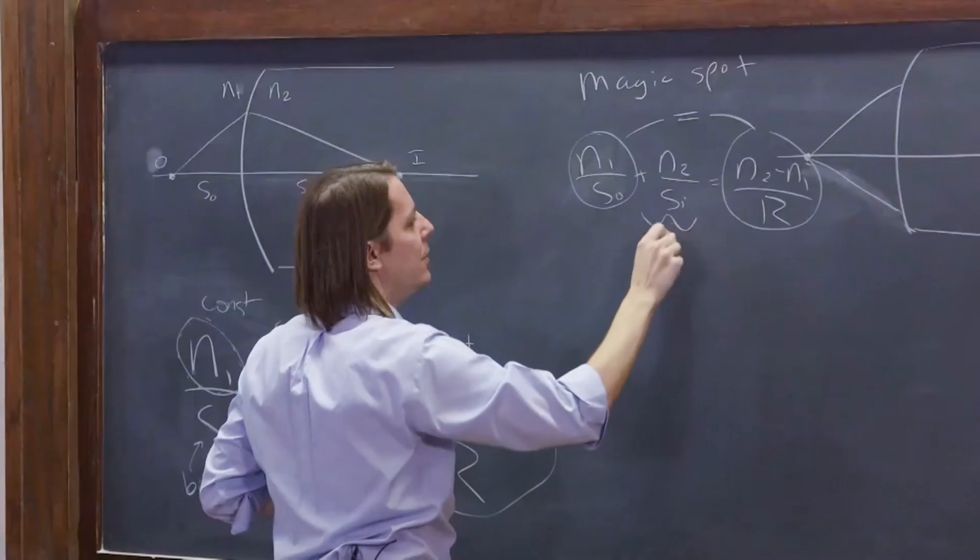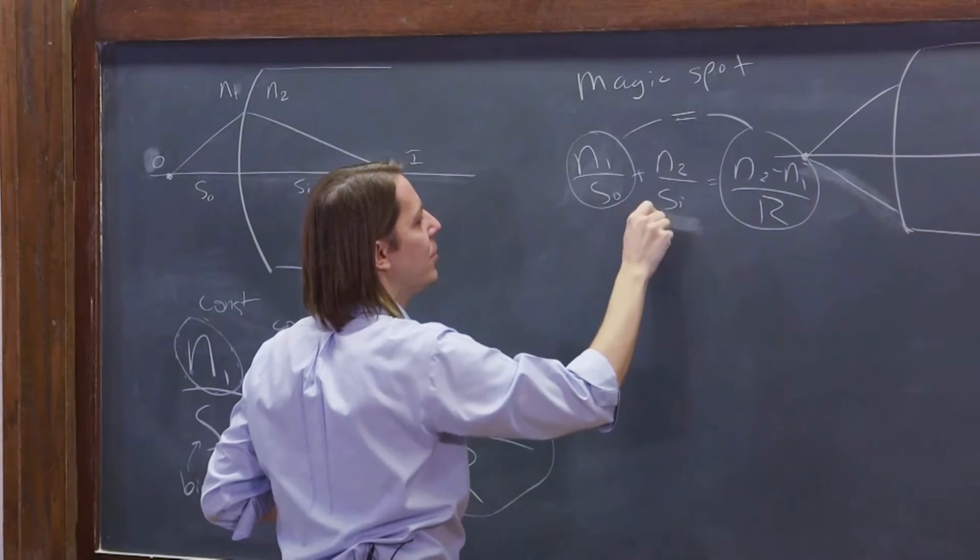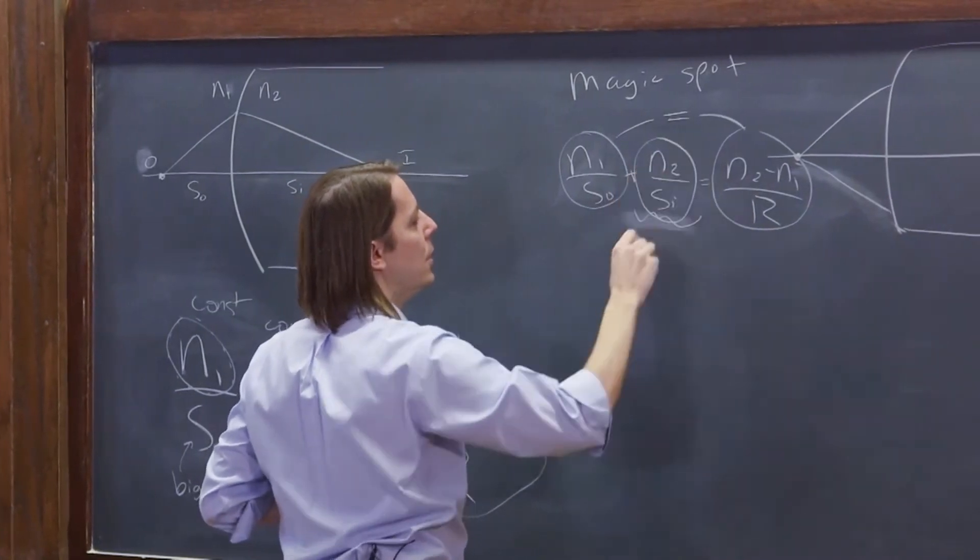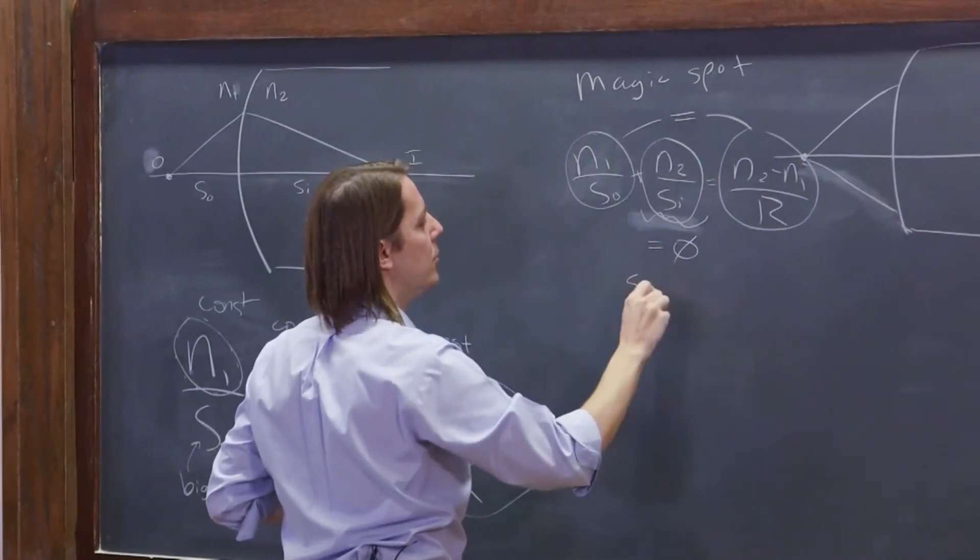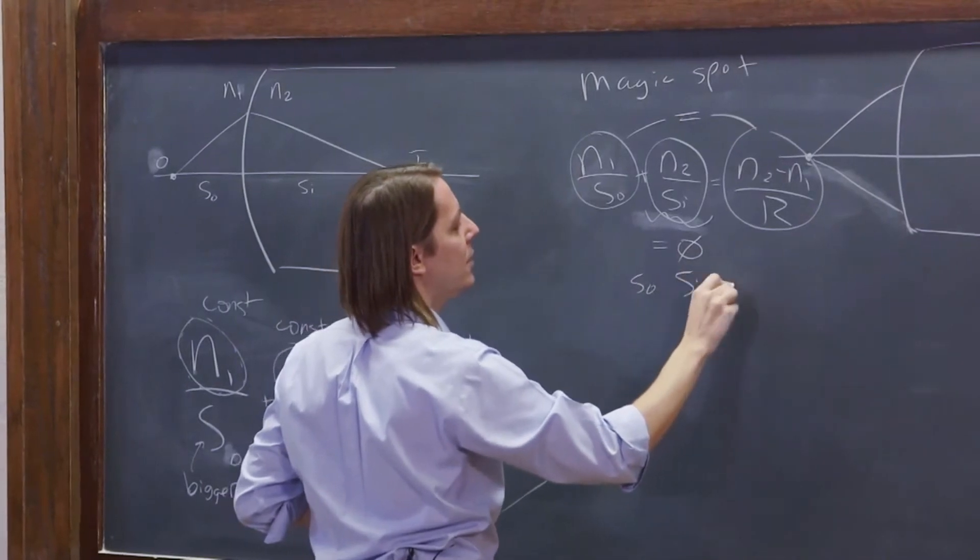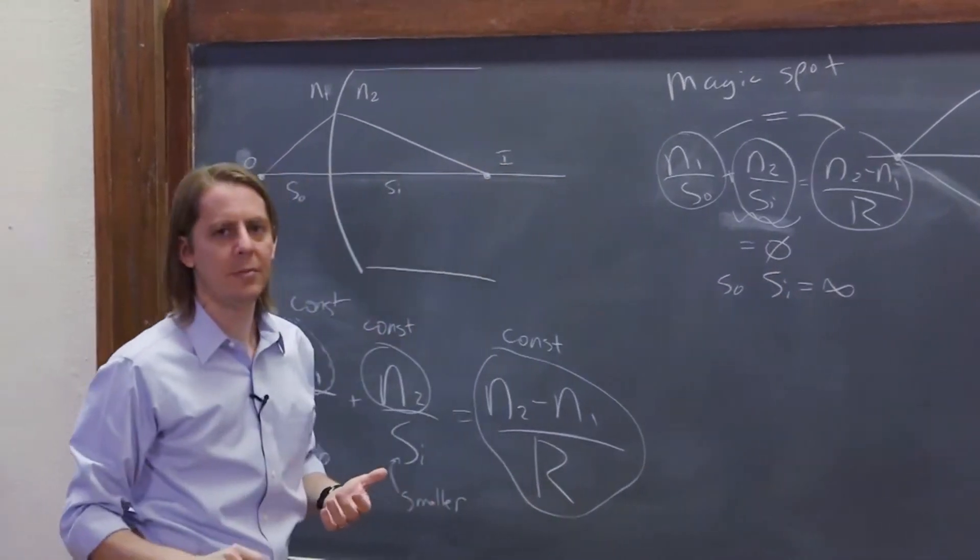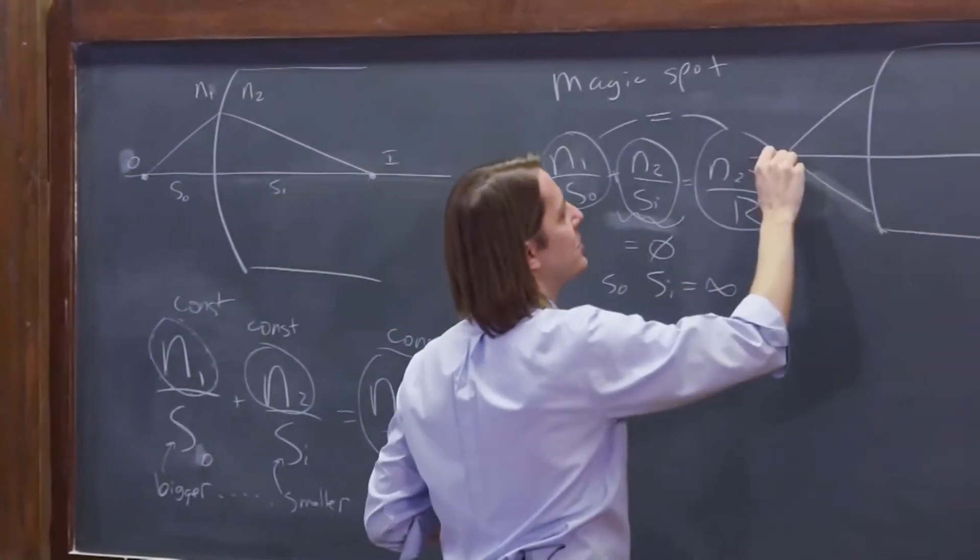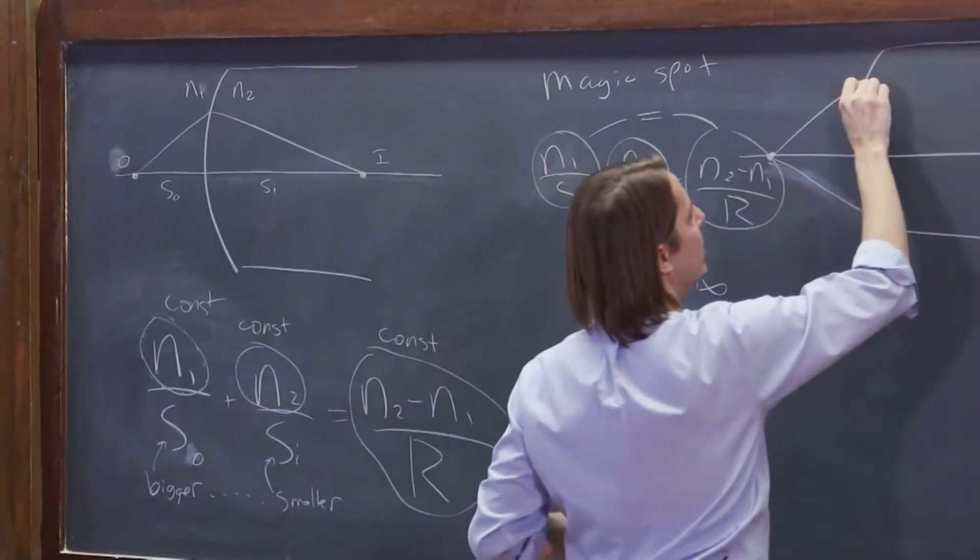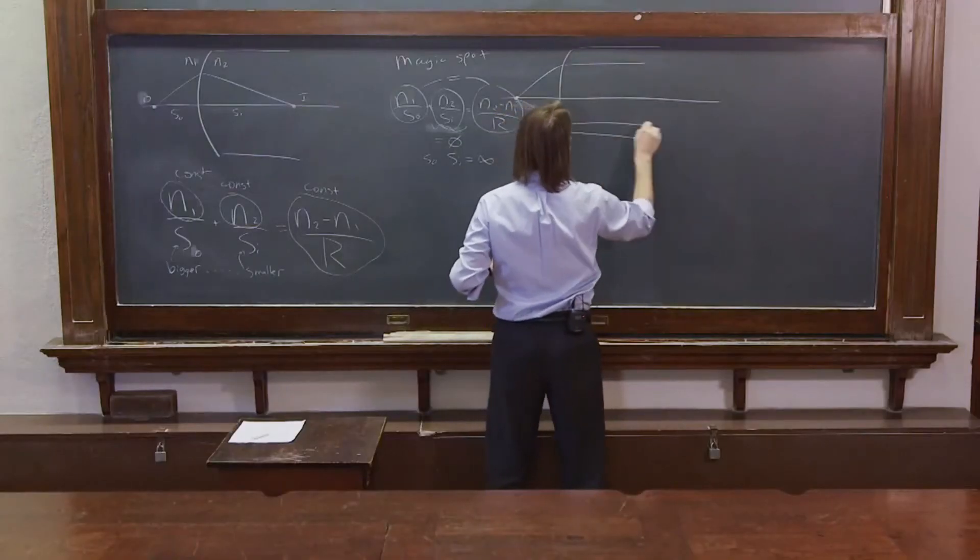If I make these two equal, this term, entire term, has to equal zero. So Si has to equal infinity. So the point is, there is a magic spot where the rays will come unparallel. It will end up parallel.